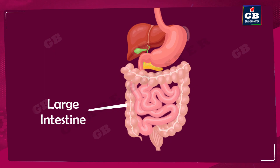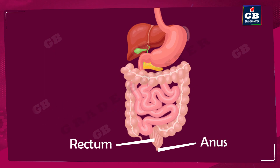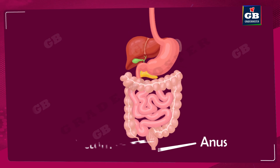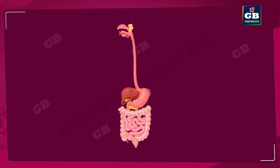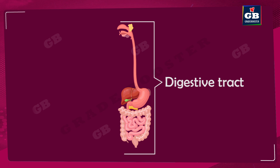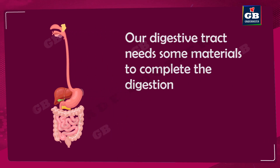After the large intestine, we find the rectum and anus. The anus is the last part of our digestive system. All these parts together are called the digestive tract. Our digestive tract cannot carry out digestion alone — it needs some materials for the process of digestion.